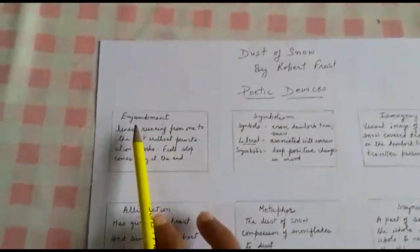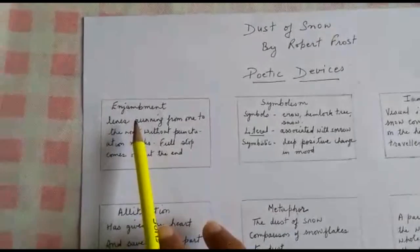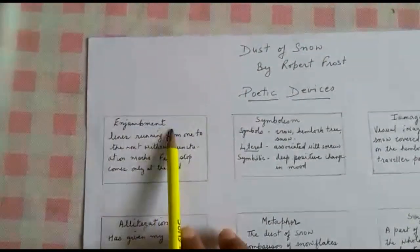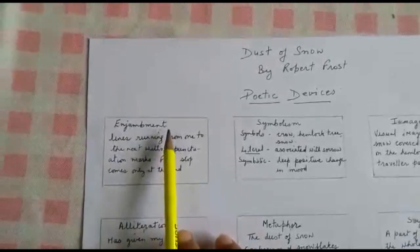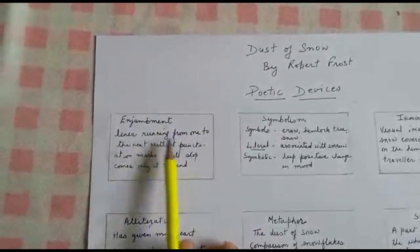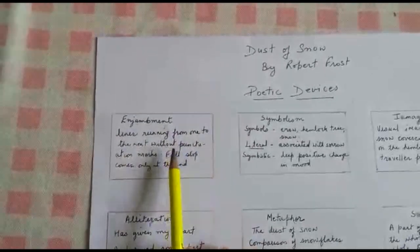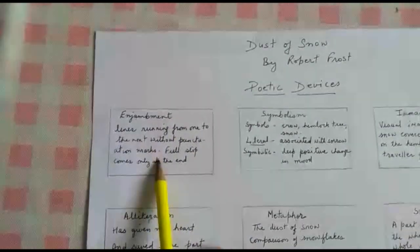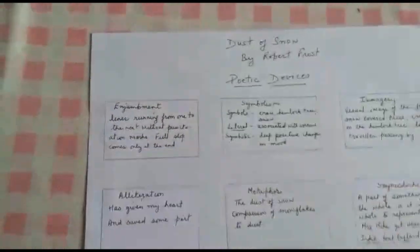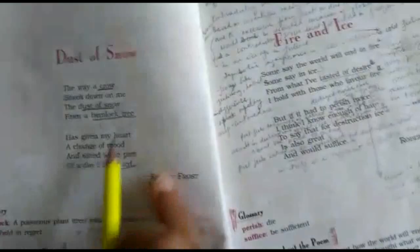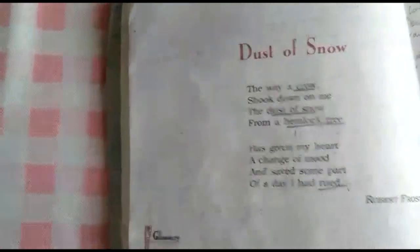Let's take the first poetic device, that is enjambment. What does this mean? Let's understand the meaning first. Lines running from one to the next without punctuation marks — full stops come only at the end. Now when we look at the poem, what do you notice? Look at the first stanza.